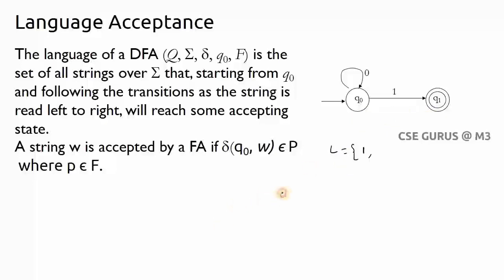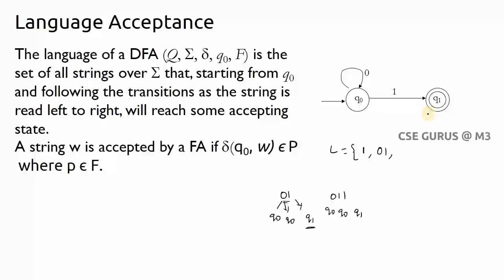For string '011': start at q0, q0 on 0 goes to q0, q0 on 1 goes to q1, then q1 on 1 — there is no such path, so '011' is not accepted. Similarly for '001': q0 on 0 goes to q0, q0 on 0 goes to q0, q0 on 1 goes to q1 — final state, so '001' is accepted. The language of a DFA is the set of all strings that, starting from q0 and following transitions left to right, reach an accepting state.